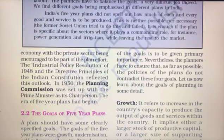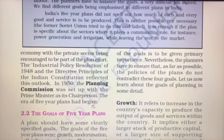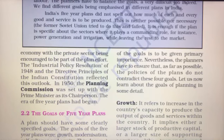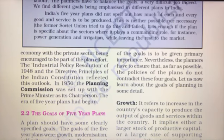In 1950, the Planning Commission was set up with the Prime Minister as its chairperson, and the era of five-year plans had begun. There were 12 five-year plans in India in total. However, the Planning Commission was later dissolved.